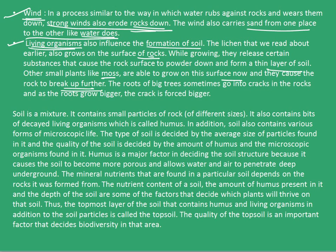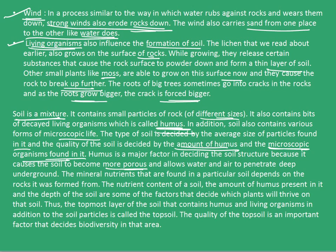The roots of big trees sometimes go into the cracks in rocks, and as the roots grow bigger, the crack is forced to widen, causing the rock to break into smaller pieces. Soil is a mixture — it contains small particles of rocks of different sizes, bits of decayed living organisms called humus, and various forms of microscopic life. The type of soil is decided by the average size of particles found in it, and the quality of soil is decided by the amount of humus and the microscopic organisms found in it. Humus is a major factor in deciding soil structure because it causes the soil to become more porous and allows water and air to penetrate deep underground.